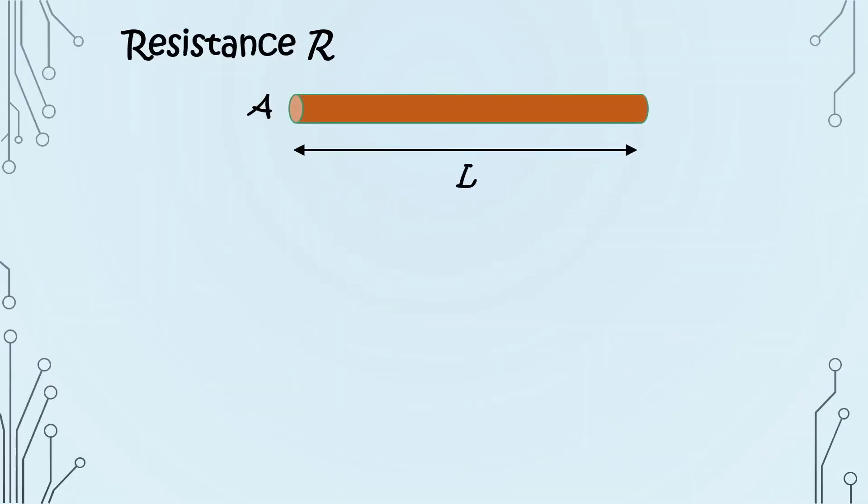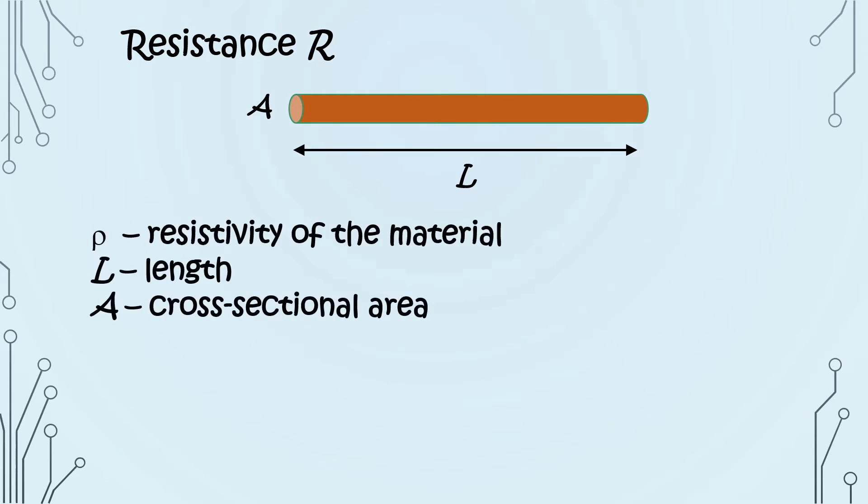We have learned in our previous video that the resistance of a wire is given by the resistivity of the material, the length, and cross-sectional area of the wire, like this. But as it turns out, the effective cross-sectional area of the wire that the current passes through is not a constant, but depends on frequency.